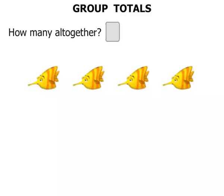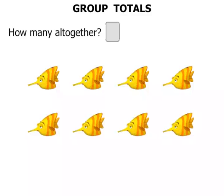Group Totals. How many all together? We can see we have one row of fish there and there is another row of fish.